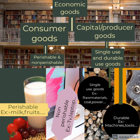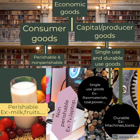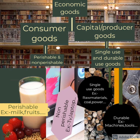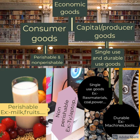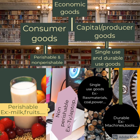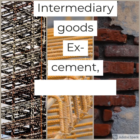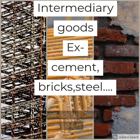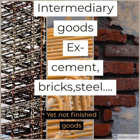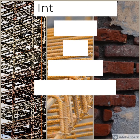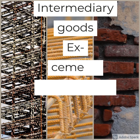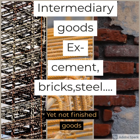Producer or capital goods are again divided into two types: single-use capital goods and durable-use capital goods. There is another type called intermediary goods, which are not yet finished. Examples are cement, bricks, and steel.